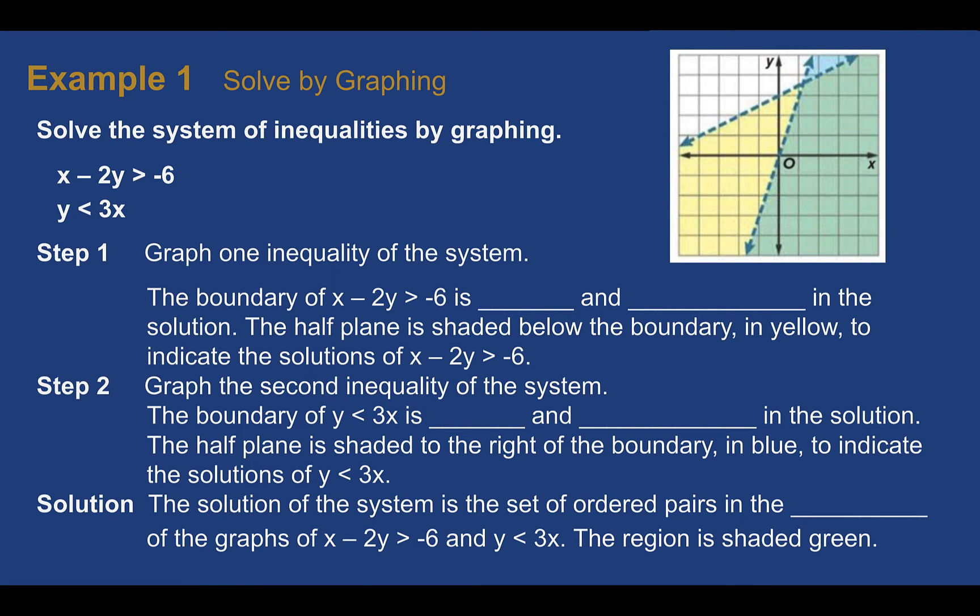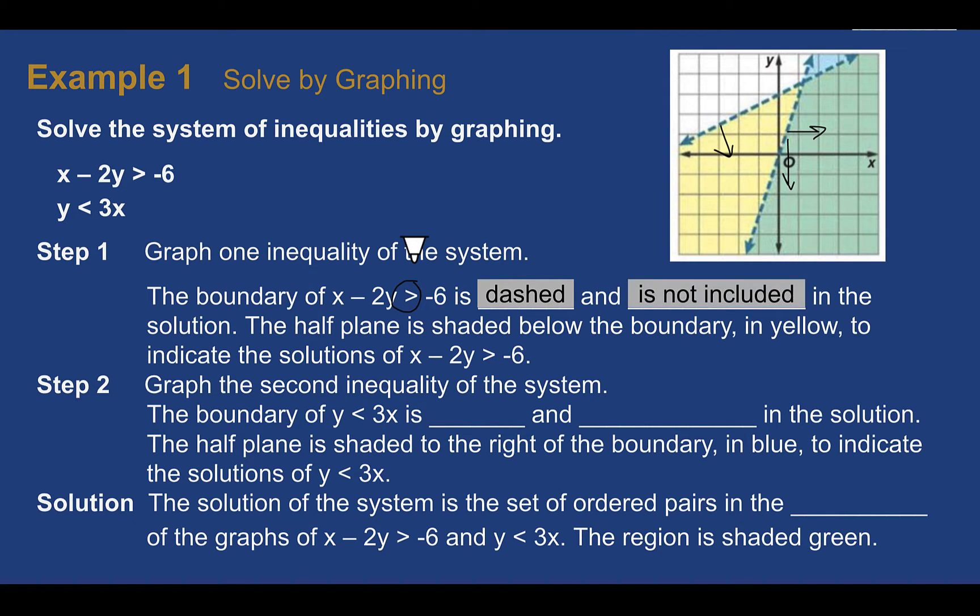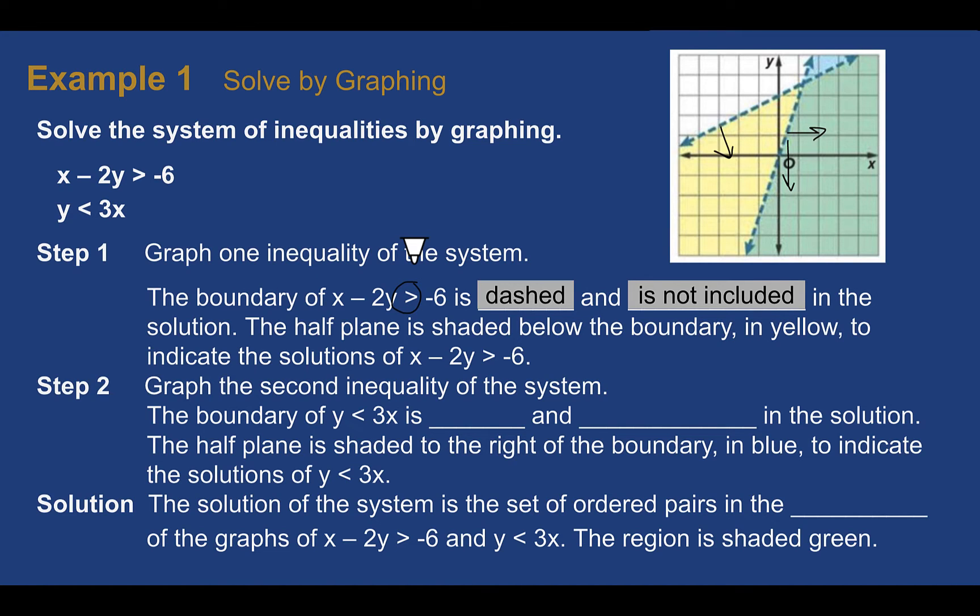Example 1. Solve by graphing. Solve the system of inequalities by graphing. We have x minus 2y is greater than negative 6, and y is less than 3x. We can see in the picture here, we are given a graph. One is shaded yellow, looking like it's shaded below, and a dashed line. And the other line, another dashed line, is shaded to the right or shaded below, and it was blue. And then it made this overlapping area, which is green. How we're going to do this, we're going to graph one inequality at a time, but we're going to do both of them on the same plane. So first we have x minus 2y is greater than negative 6. The boundary is dashed. Remember, I can tell because there is no line underneath it. It's just a regular greater than or less than sign. And because it's dashed, it is not included in the solution. Then we would shade it below the boundary to show where the solutions are.